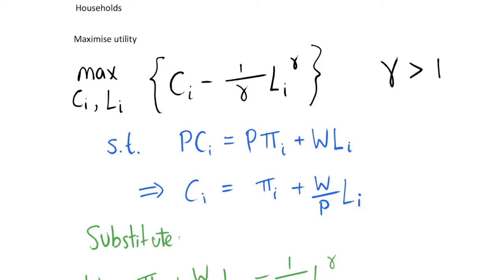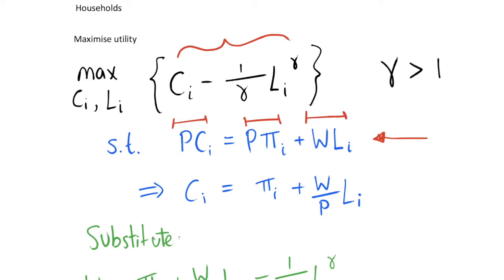One side of the economy is given by households. We have a representative household that maximizes their utility, and their utility function depends on consumption and labour with some elasticity of labour supply. They maximize this utility with respect to their budget constraint, which says the nominal value of their consumption equals the profits from their firm plus the wages they earn from working for a different firm, evaluated with respect to the price level.